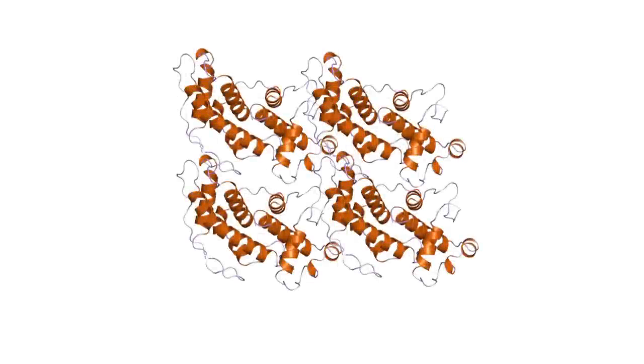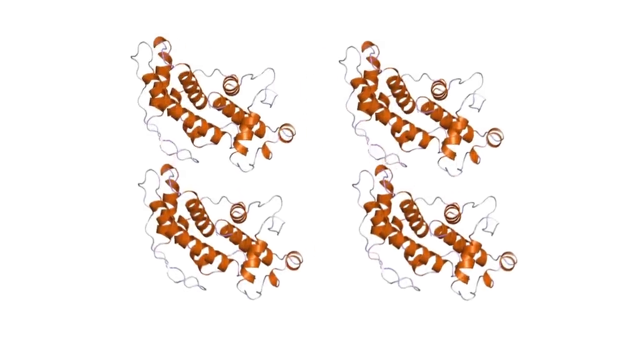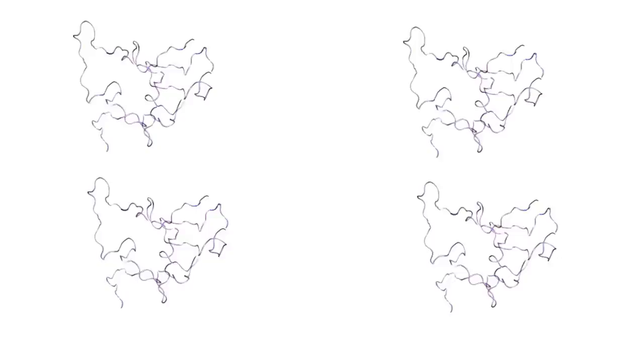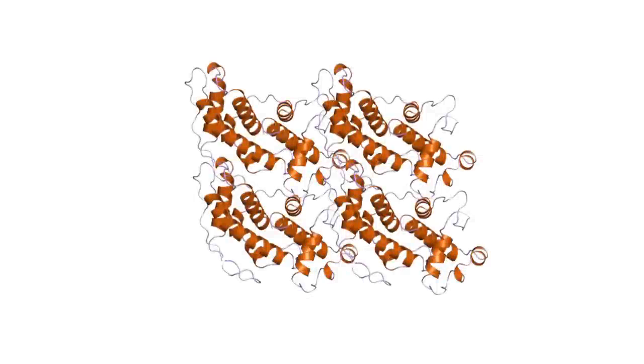Four member packages of alpha-synuclein must break apart before they can form dangerous clumps. And that means scientists have a new therapeutic quest. If they can keep alpha-synuclein packages from breaking apart, they might be able to prevent Parkinson's from progressing, or even from developing.